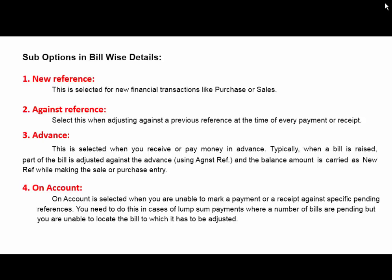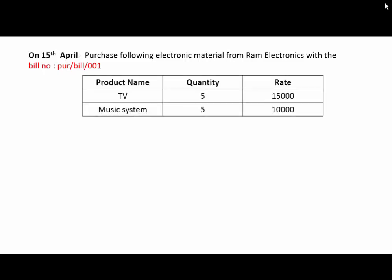Let's understand an example of Billwise Details with these types of references. On 15th April, purchase the following electronics material from Ram Electronics with bill number PUR/Bill/001. The products are: TV, 5 quantities at rate 15,000, and music system, quantity 5 at rate 10,000. So let's make the entry in the Tally voucher.